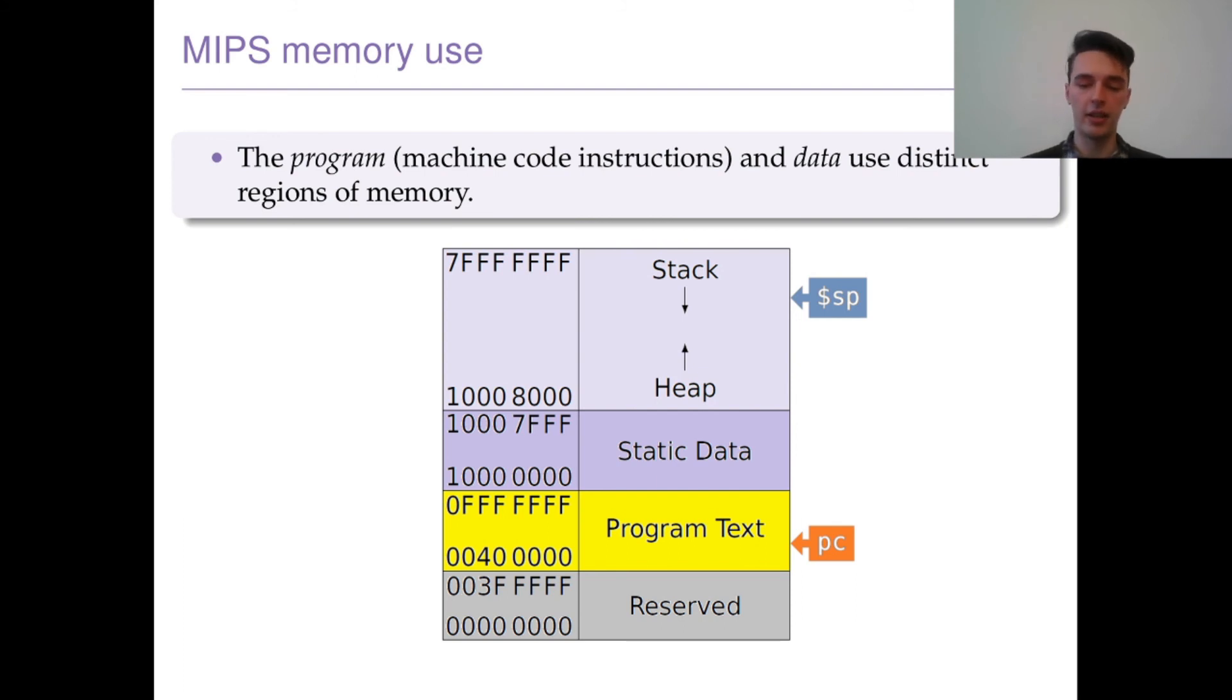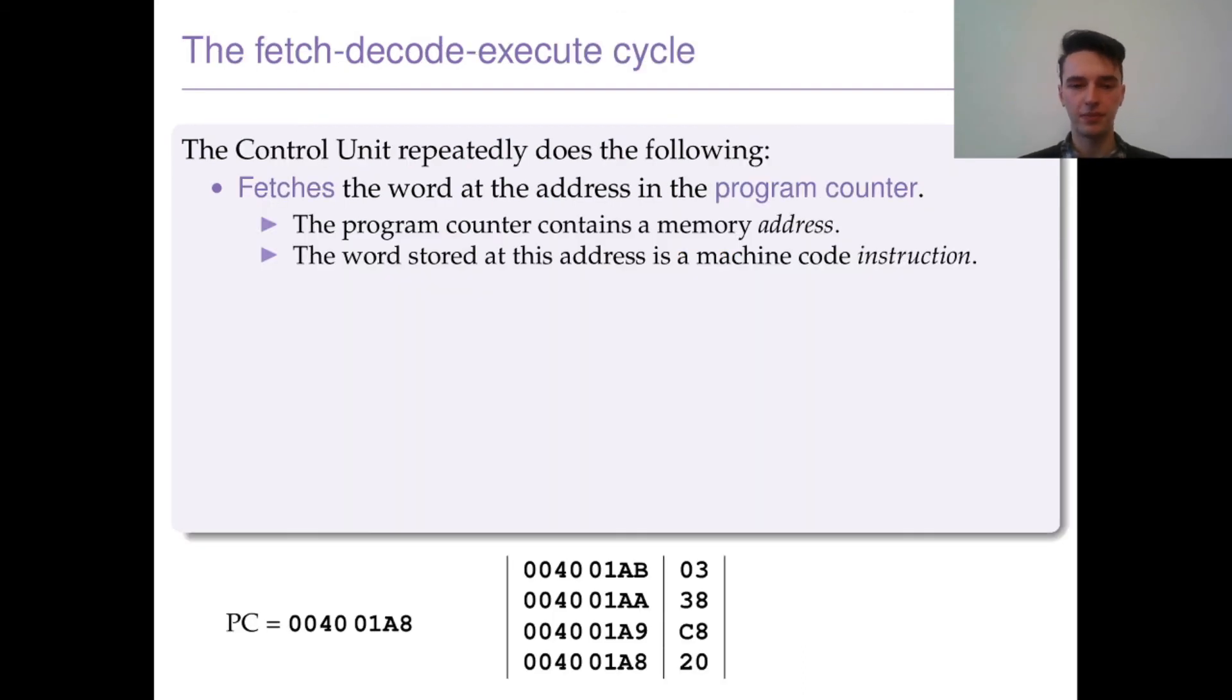Program text is where your program will be assembled into, stored in registers, and then read out by this little PC thing here, which is called the program counter. It tells us where in memory our next instruction is, and then it increments to find the instruction after that once we've executed. There's some reserved registers for things like the kernel, the operating system - things we don't really need to worry about and you definitely shouldn't fiddle with yet.